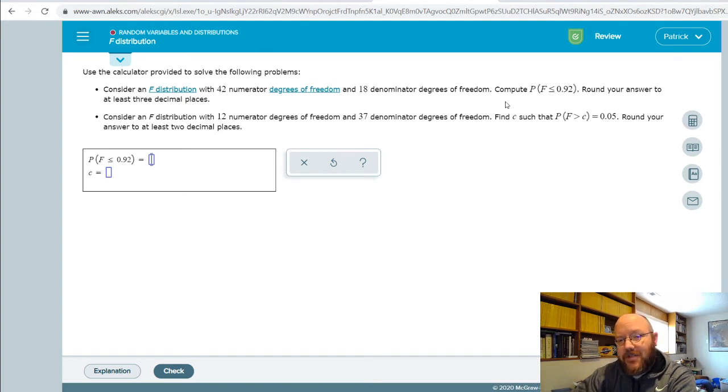That'll make a little bit more sense in the next couple videos. But all I want you to do here is compute the probability of finding an f statistic that's less than or equal to 0.92. Round your answer to at least three decimal places. So to do this top problem, and this top problem's almost always the same.